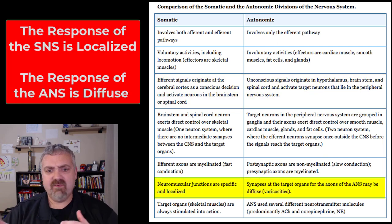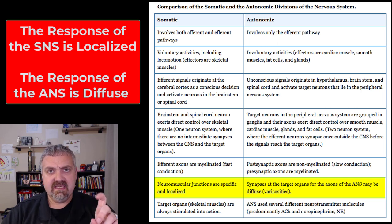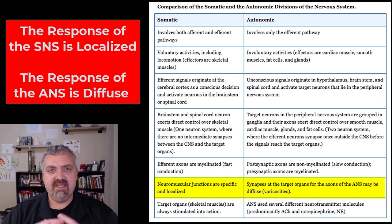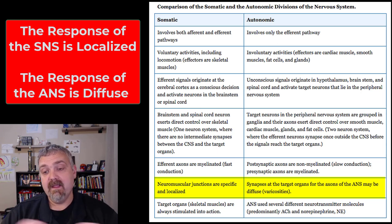The somatic nervous system is very localized — you tell individual motor units what to do when controlling your skeletal muscles. The autonomic nervous system is very diffuse; the responses can be huge and can target multiple organs.